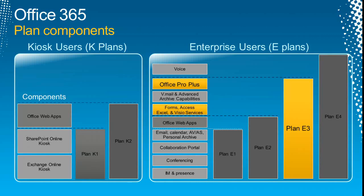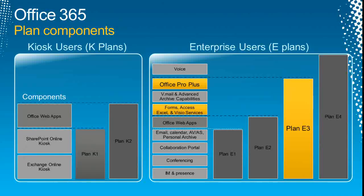Looking at the enterprise users on the right-hand side: if someone needs a solution using Access Services or Excel Services, the key question to ask is whether they have the E3 or E4 plan — because without those plans, these services will be disabled. You will not be able to develop solutions around InfoPath, Access Services, Excel Services, and Visio Services. With the E3 or E4 plans, you also get the Office Pro Plus subscription. It works on a subscription model.